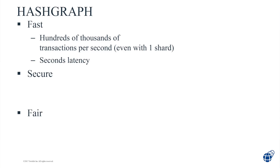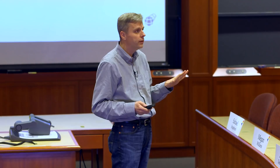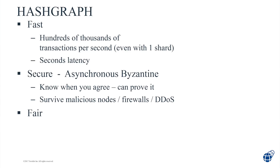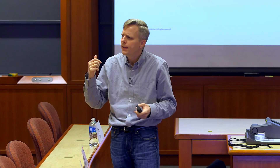Hashgraph is secure in the same ways other systems are secure, but also in some new ways. The math term is asynchronous Byzantine — Byzantine fault tolerant in an asynchronous sense. This is the strongest form of security. For 35 years, the gold standard in security has been asynchronous Byzantine. Some systems are partially asynchronous or synchronous Byzantine, and some aren't Byzantine at all — they're just 'we're pretty sure they're safe.' But if you have strong math proofs, you can say it's asynchronous Byzantine.